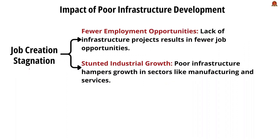Another major drawback is stagnation in job creation. Infrastructure projects create direct and indirect jobs, and the lack of infrastructure development means fewer construction projects and employment opportunities. This disproportionately affects low-skilled labor who rely on infrastructure and construction works. Without necessary infrastructure, industries like manufacturing, agriculture, and services struggle to grow, limiting job creation in these sectors.